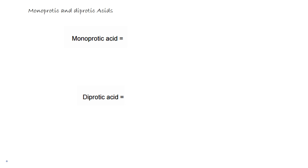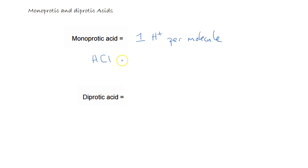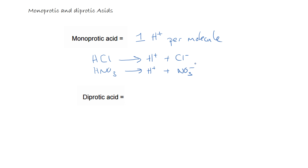We're now going to move on to look at monoprotic and diprotic acids. A monoprotic acid is one that releases one hydrogen ion per molecule. Examples include hydrochloric acid, HCl, which dissociates to form one H⁺ and one Cl⁻ when dissolved in water, or nitric acid, HNO₃, which dissociates to one hydrogen ion and one nitrate ion.